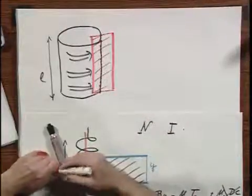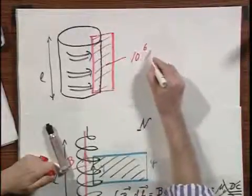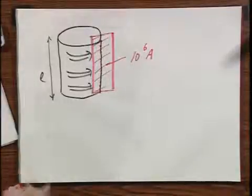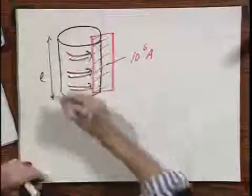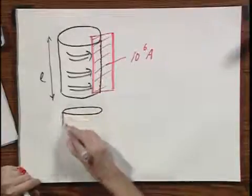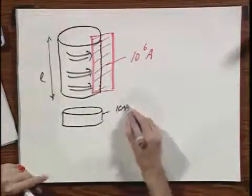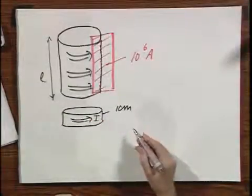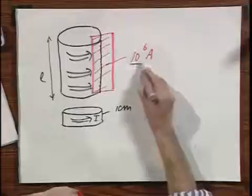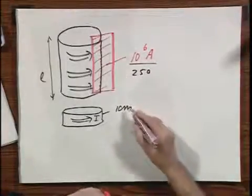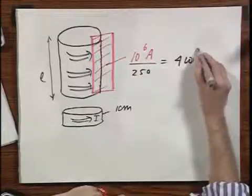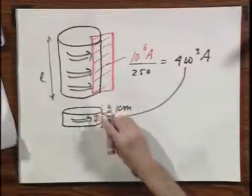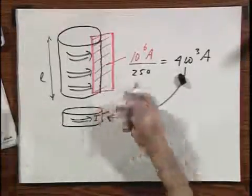What then is the total current that goes through that sheet? Well, that, of course, is 10 to the 6 amperes. I just calculated that. But now, I don't take a length L, but I take something more modest. I take a ring of which this is only one centimeter. And now I want to calculate how much current goes through that one centimeter, so it's immediately obvious that it is the 10 to the 6 amperes divided by 250, and that is 4 times 10 to the 3 amperes, going only through this ring, which has a thickness of one centimeter.